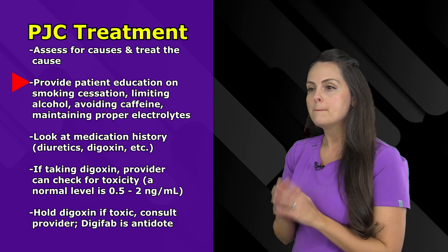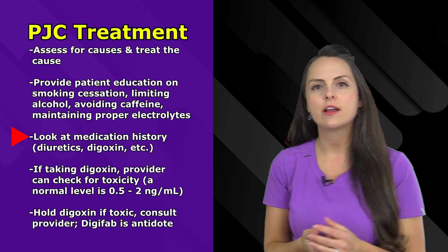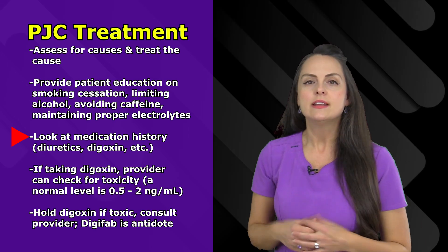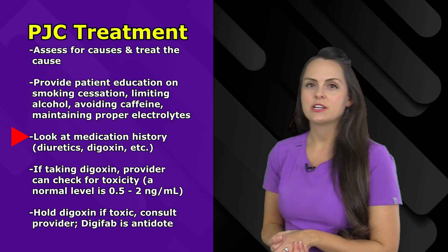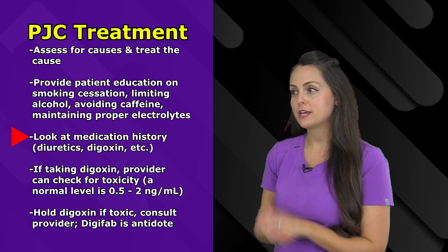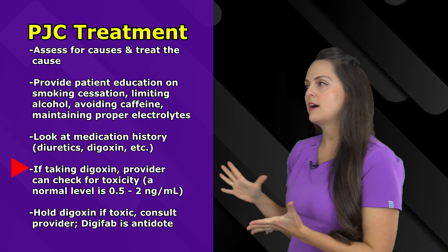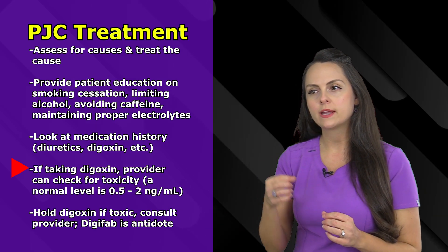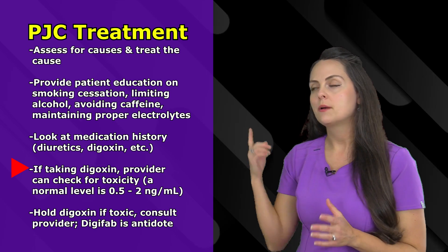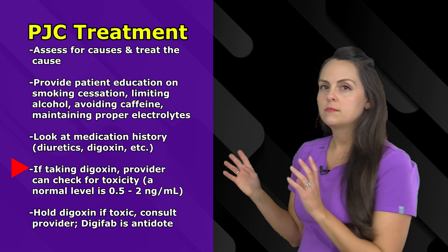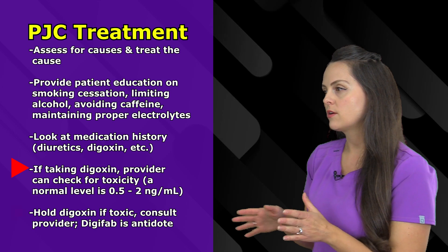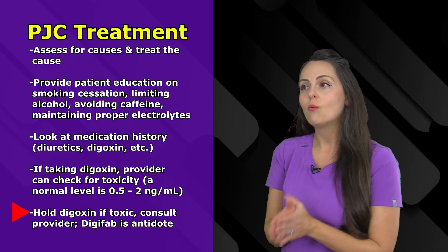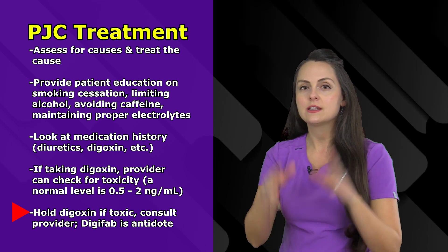Make sure patients are staying hydrated and balancing electrolyte levels. Look at their medication history — for example, diuretics can really alter electrolyte levels. If you notice PJCs and the patient is taking digoxin, notify the healthcare provider and they can order a digoxin level. A normal level is about 0.5 to 2 nanograms per milliliter — anything greater puts the patient in toxic territory. You'd want to hold the medication and follow the provider's guidance. For testing purposes, the antidote for digoxin is Digifab.